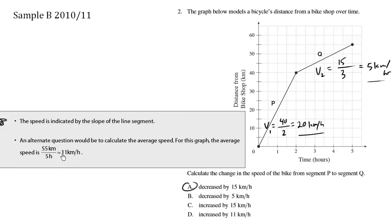An alternate question would be to calculate the average speed. The average speed from the beginning to the end of a distance-time graph is simply the slope from the beginning point to the end point.